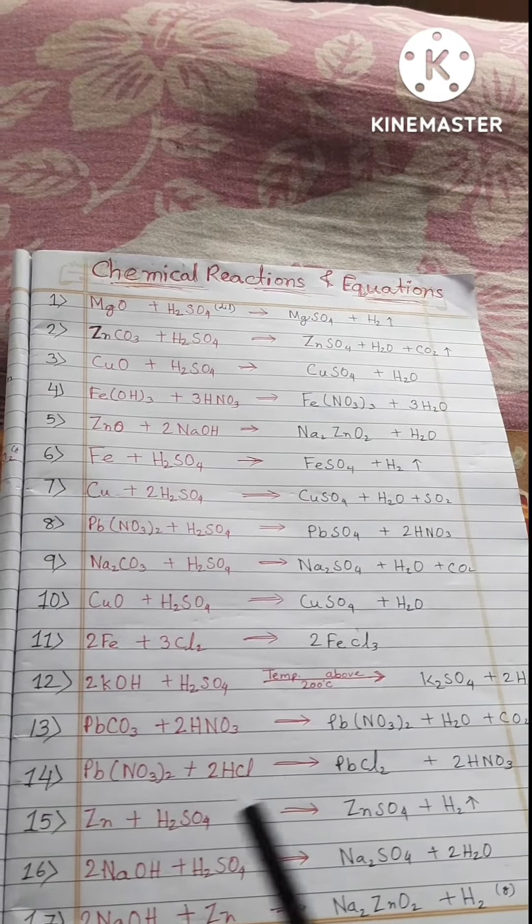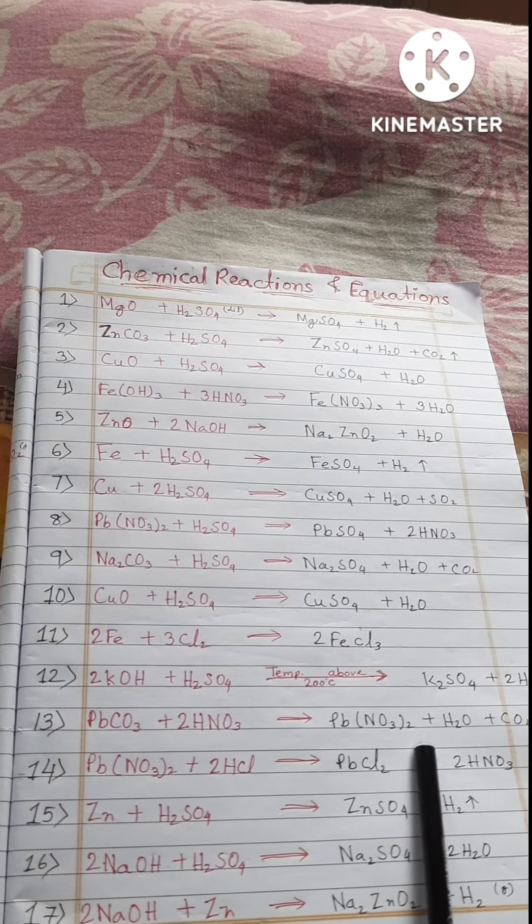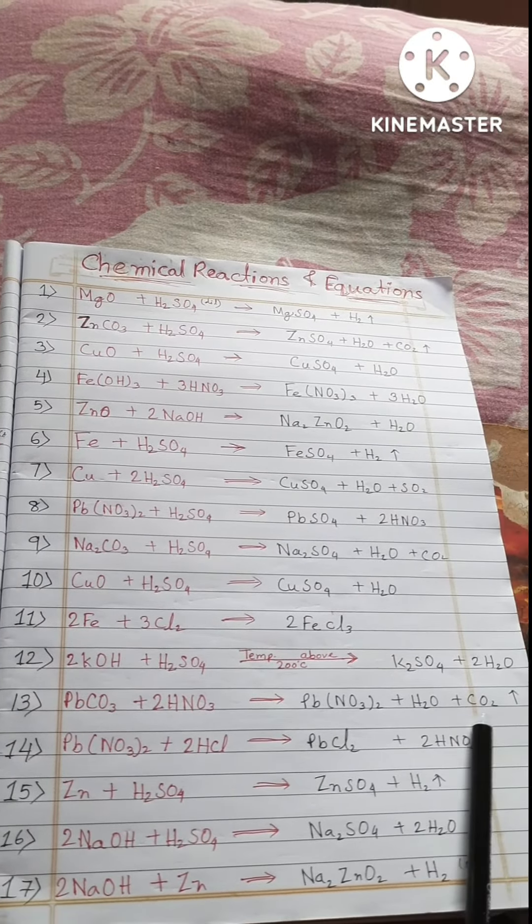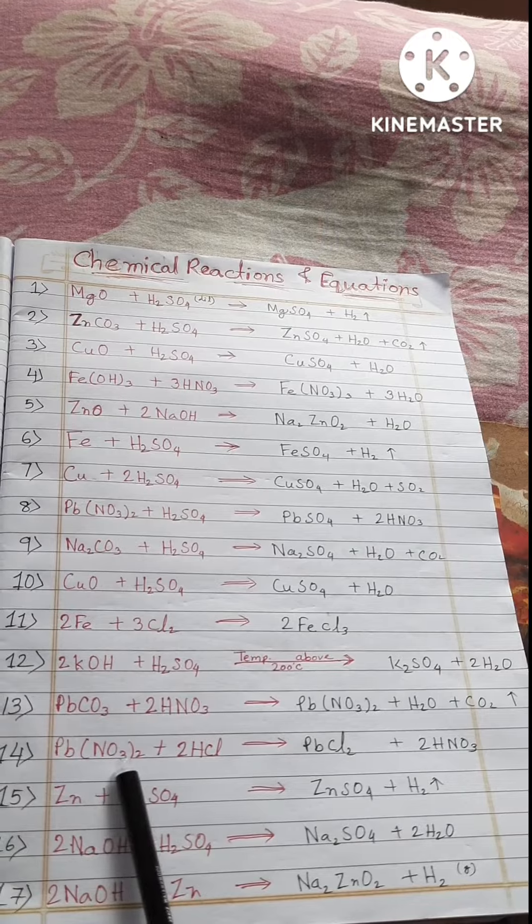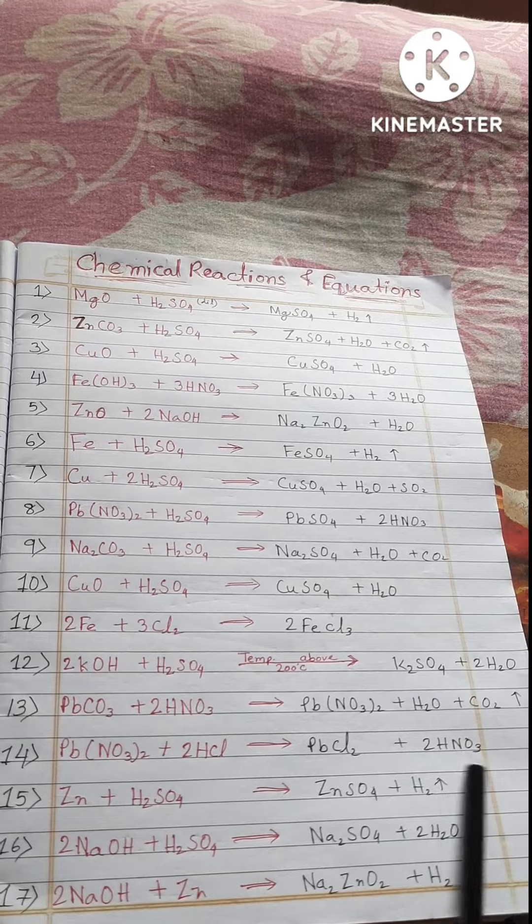PbCO3 plus 2HNO3 equals Pb(NO3)2 plus H2O plus CO2. Pb(NO3)2 plus HCl equals PbCl2 plus 2HNO3.